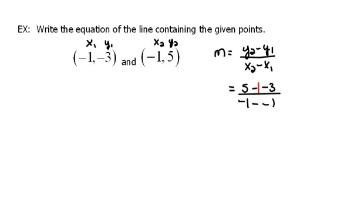These double negatives here become positives. So, now we have 5 plus 3 is 8. Didn't mean to do that in red there. 5 plus 3 would be 8, and negative 1 plus 1 would be 0.